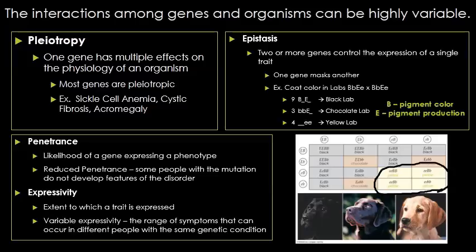Some diseases have different penetrance and expressivity. Penetrance is the likelihood of expressing a phenotype, and expressivity is the extent to which it is expressed. With reduced penetrance, you may have the disease or mutation but not actually develop the disorder. With variable expressivity, you may have the disease but not have it as severely as someone else. A common example is Down syndrome, which has 100% penetrance — no reduced penetrance at all — but very high variable expressivity, meaning effects can range from very mild to very significant.